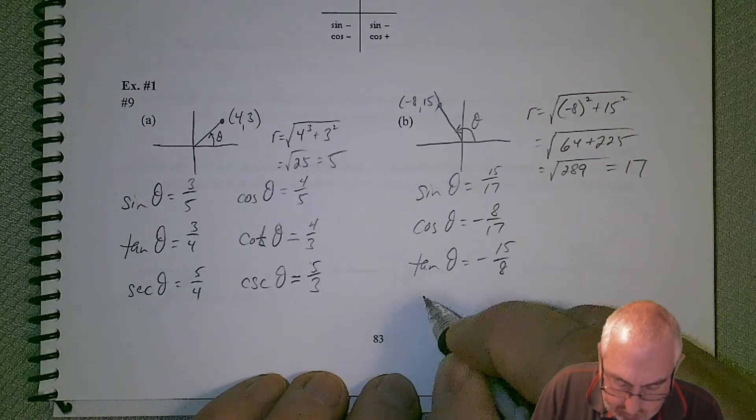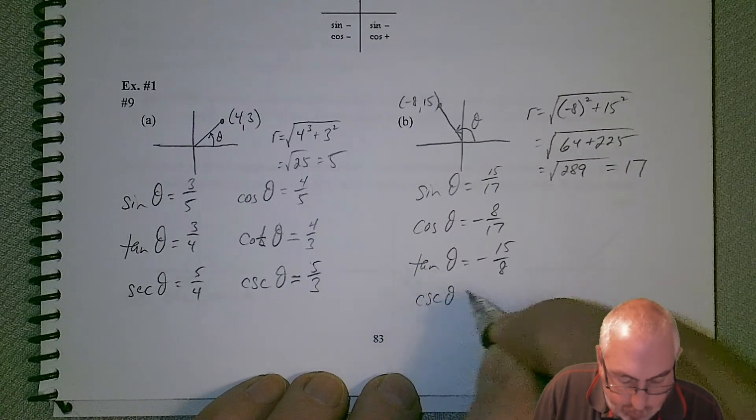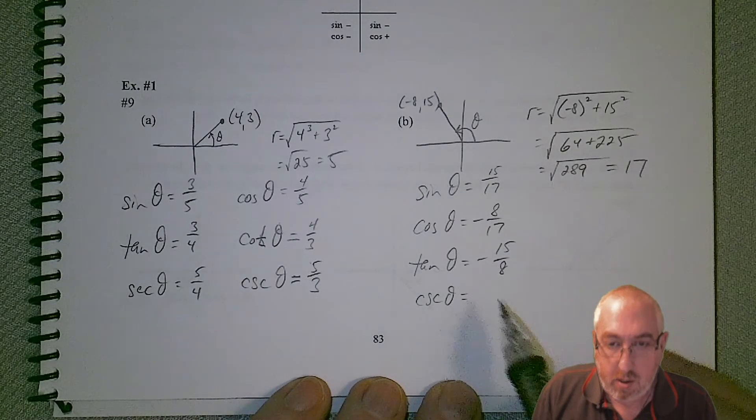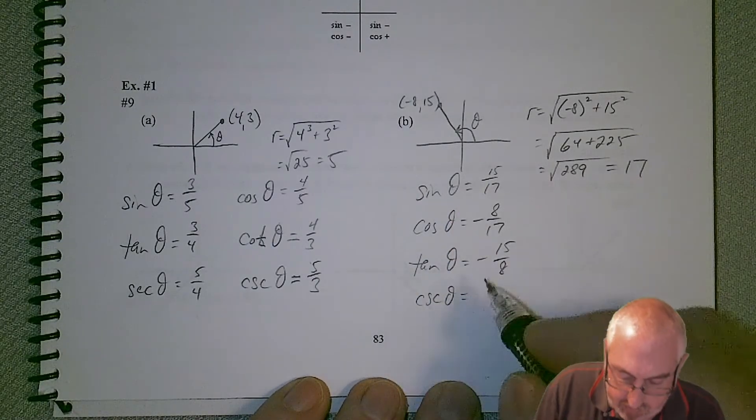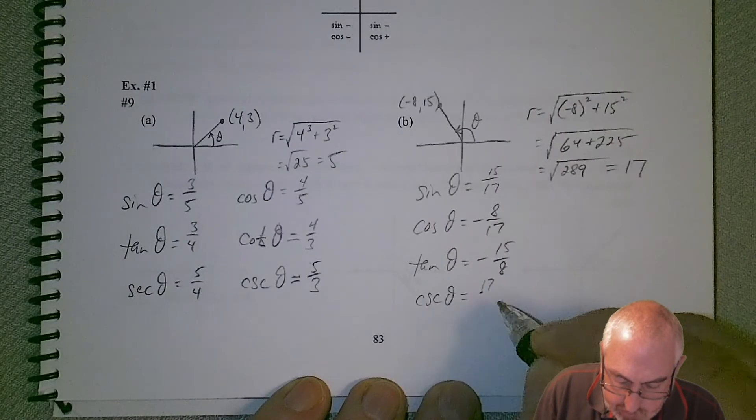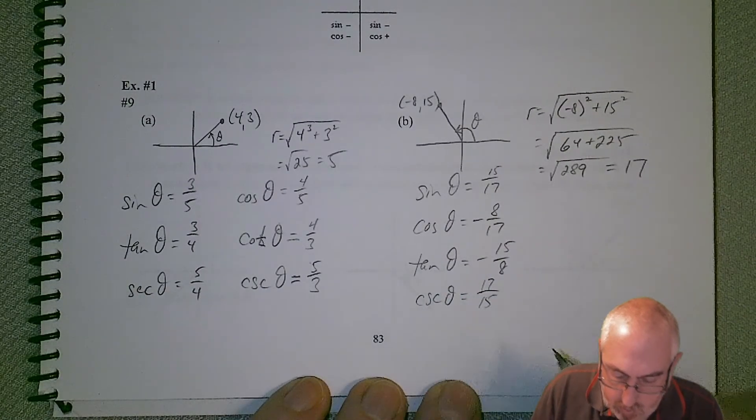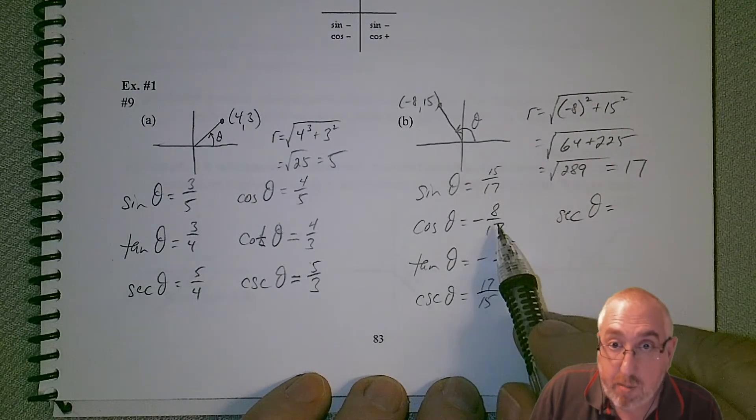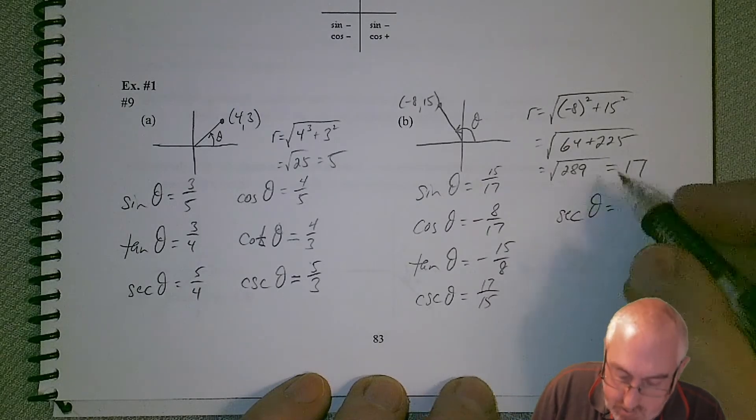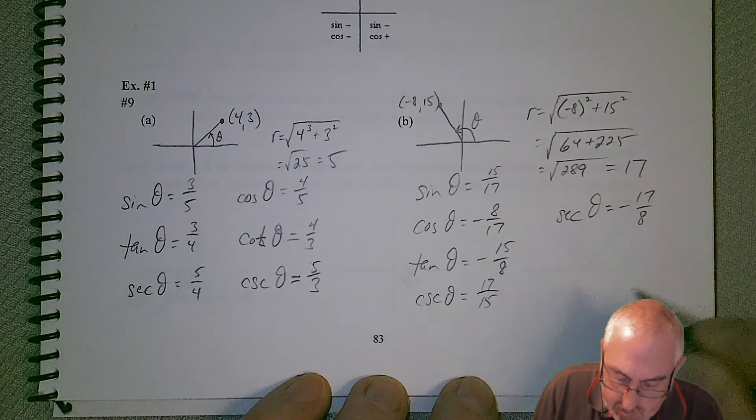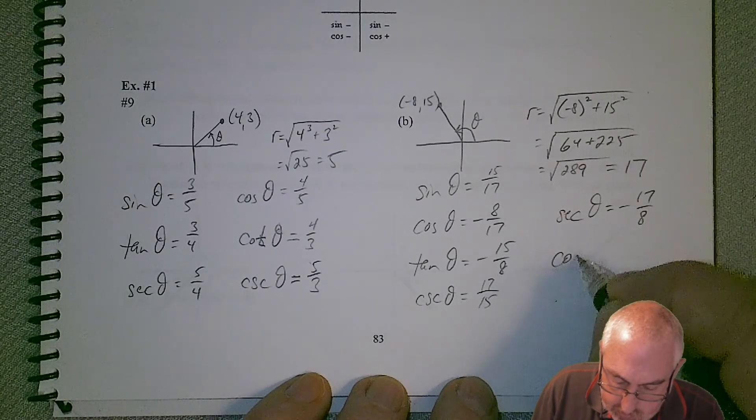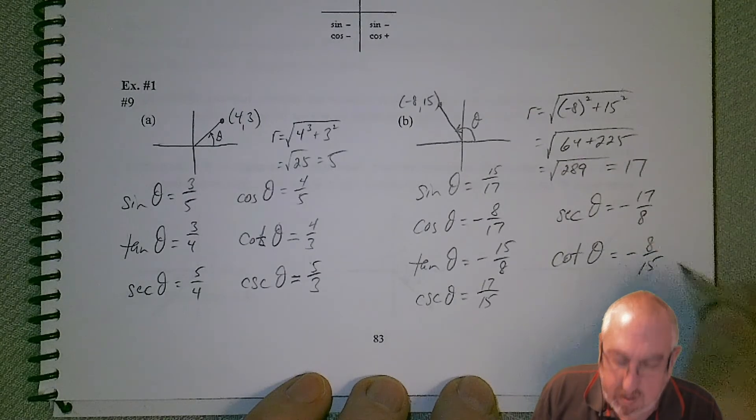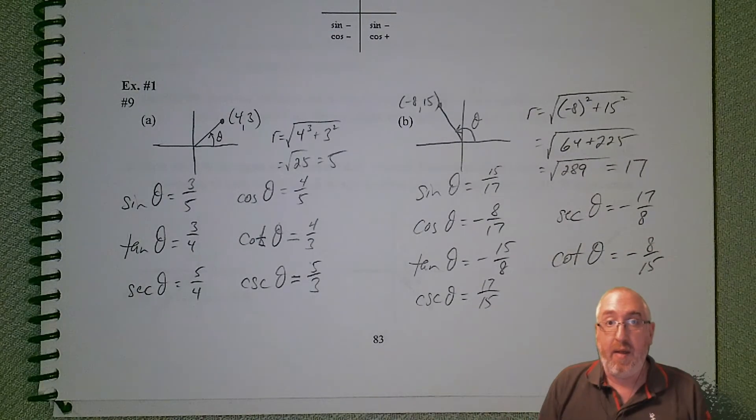Let's keep going. We've got cosecant - it doesn't matter what order you do these in as long as you know which ones give you which values. Remember, cosecant is related to sine, so we just take the reciprocal, 17 over 15. Then we've got secant, which is the reciprocal of cosine, so negative 17 over 8. And last but not least, cotangent, which would be negative 8 over 15. And that wraps that up.